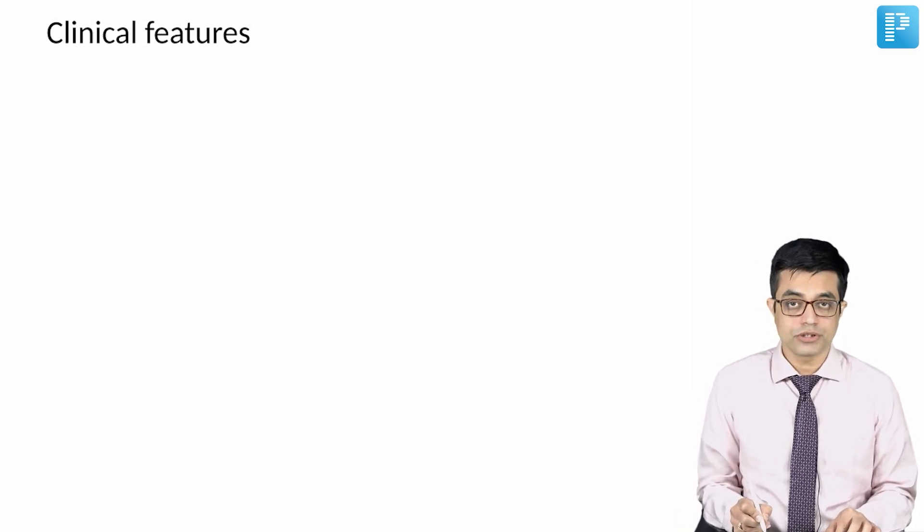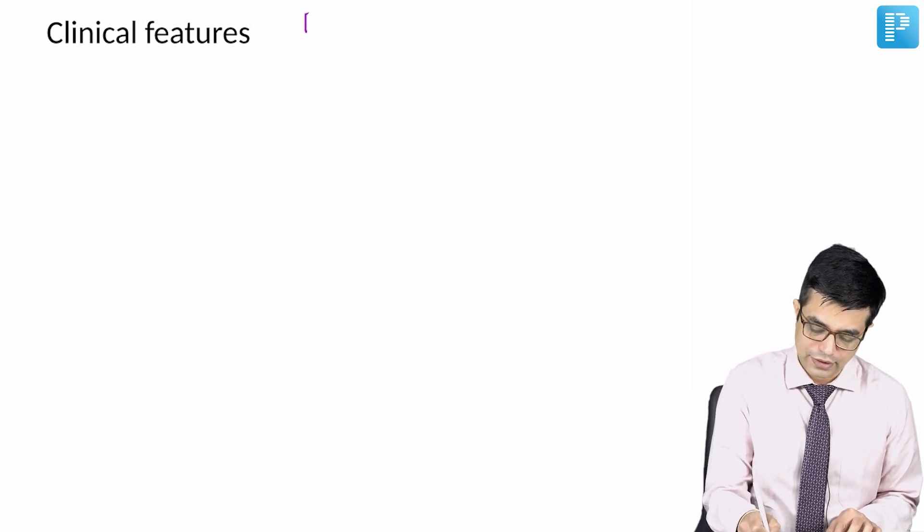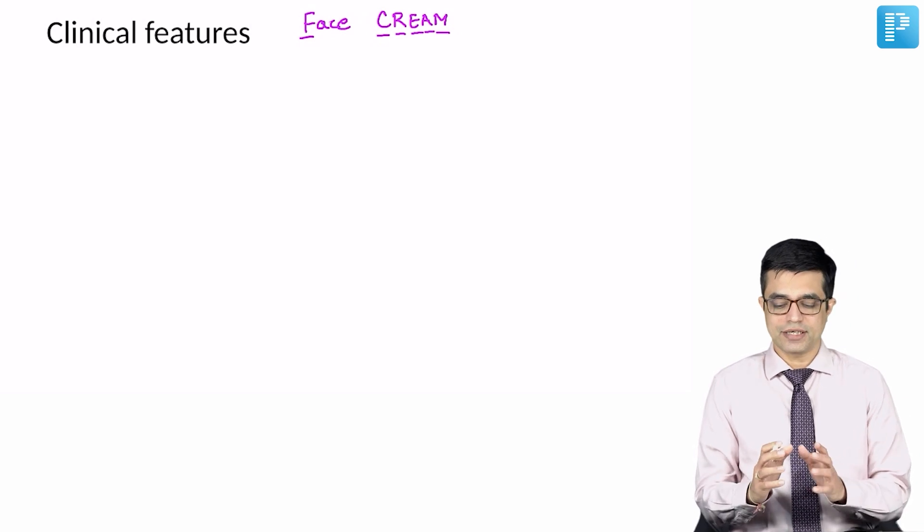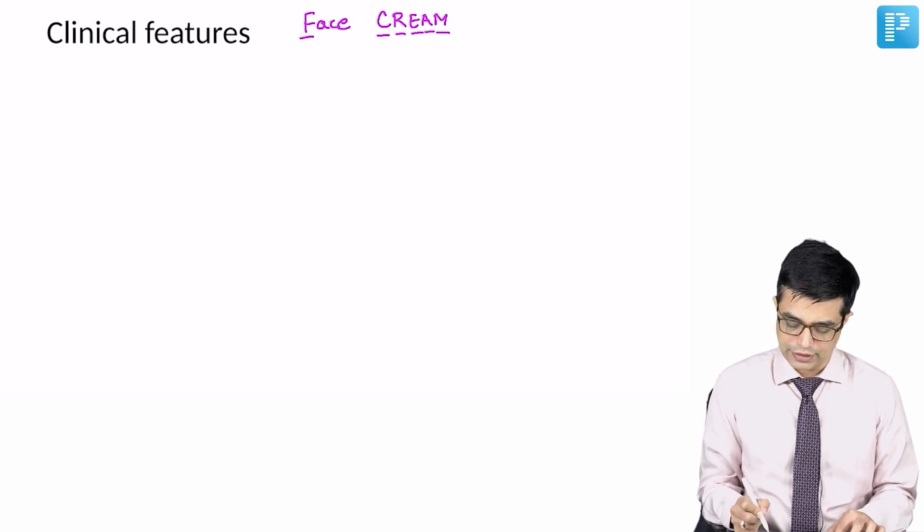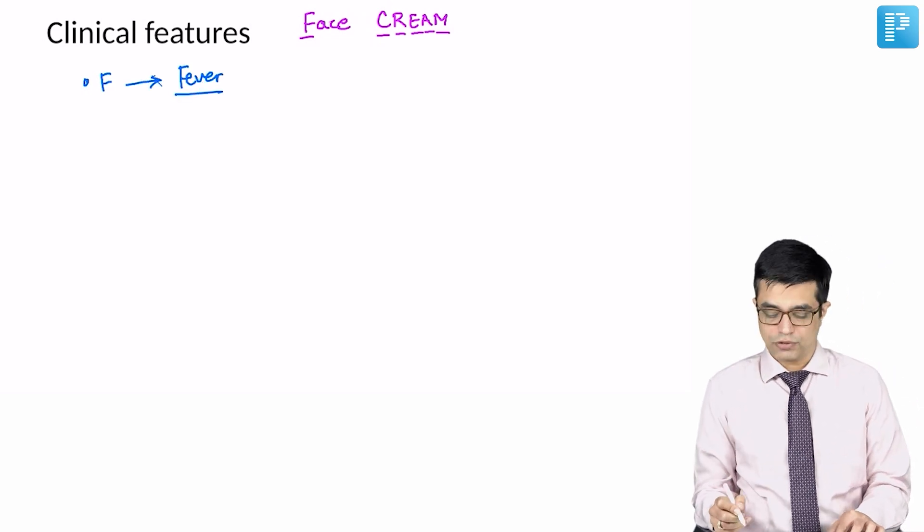To remember the cardinal features of Kawasaki disease, we use the mnemonic known as FACE CREAM, where F stands for fever and CREAM stands for the other five manifestations. These are the six cardinal features of Kawasaki. First, F stands for fever.